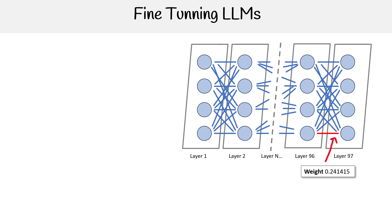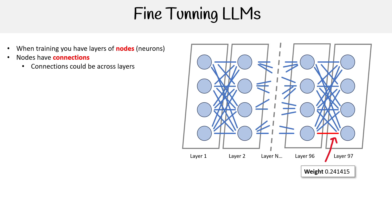We first have to take a look at hidden layers and their components. When training, you have layers of nodes, also called neurons — think like your brain. And between these nodes there are going to be connections. Connections are often between or across layers, but connections can also be within the same layer. That's where we get the concept of self-attention.